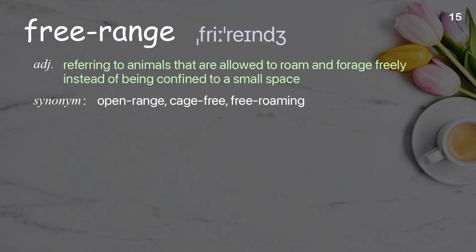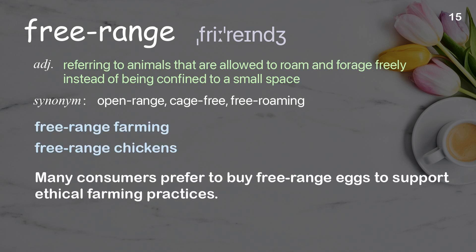Free range: referring to animals that are allowed to roam and forage freely instead of being confined to a small space. Examples: free-range farming, free-range chickens. Many consumers prefer to buy free-range eggs to support ethical farming practices.